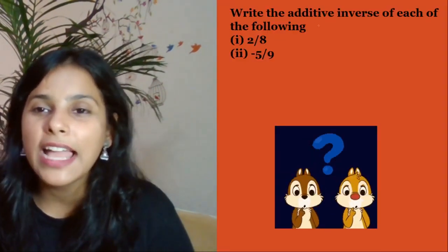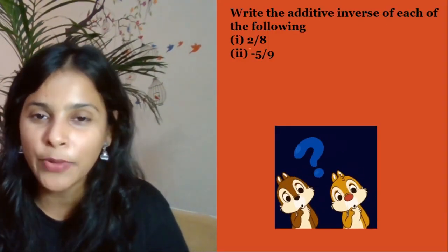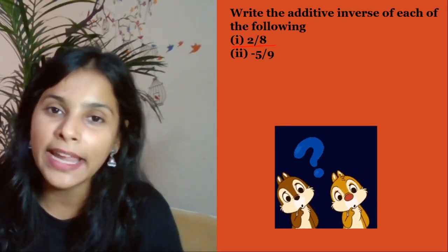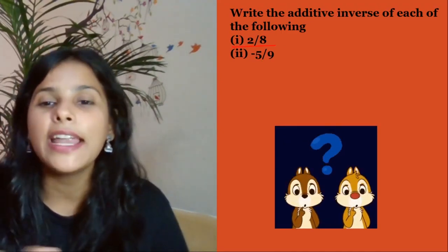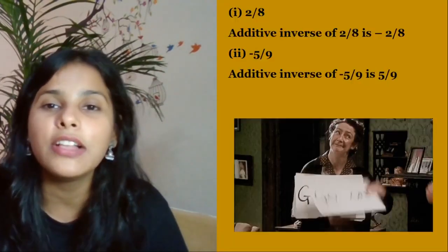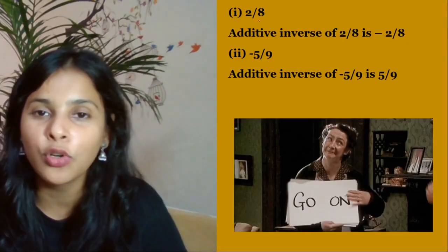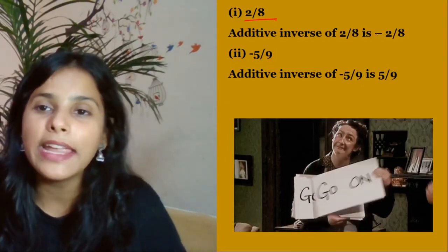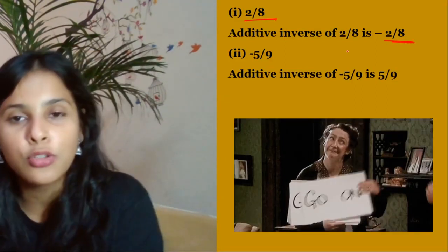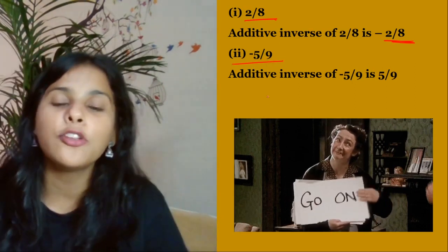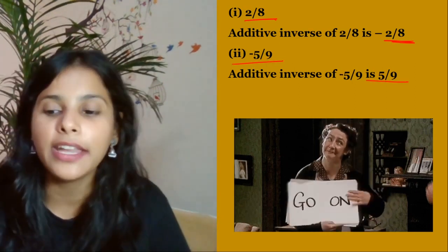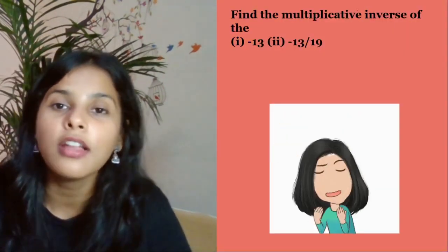Next question: write the additive inverse of each of the following. First part: 2/8. The additive inverse is just a sign change, so it becomes -2/8. For -5/9, change the sign to get 5/9.